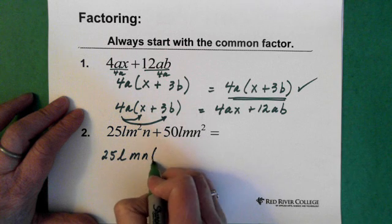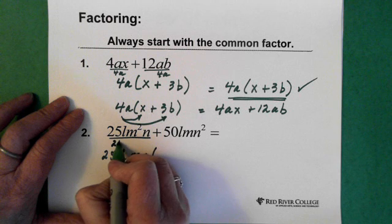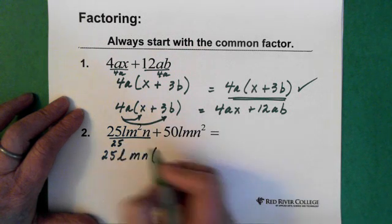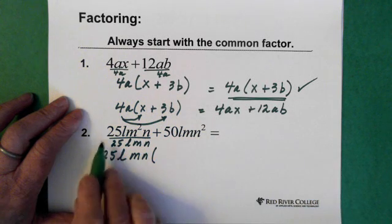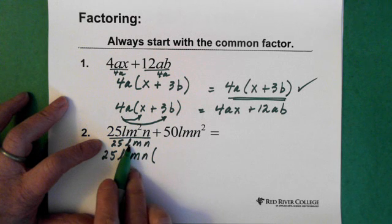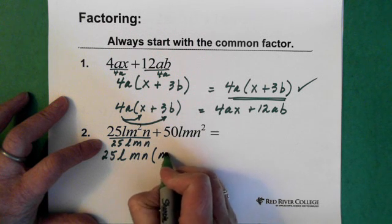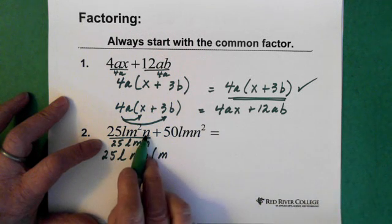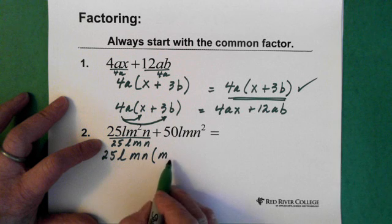All right, so we pull that out and then we put in our bracket. And essentially, again, we're dividing this by 25, L, M, N. So the 25 divided by 25 gives us 1. The L divided by L gives us 1. M squared divided by M leaves us with an M. And the N divided by the N again is 1. So all we have for that first piece when we pull it out is the M.